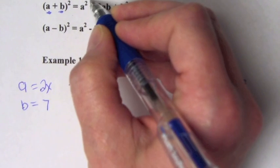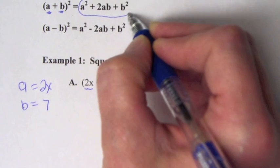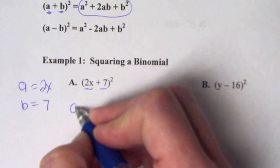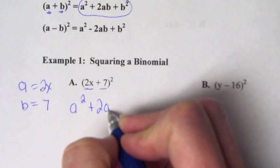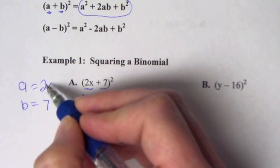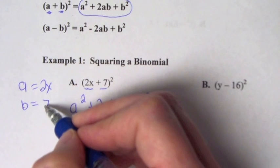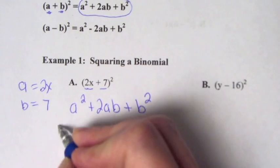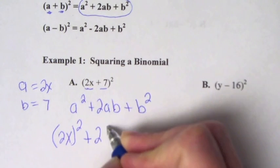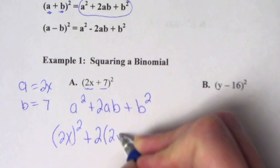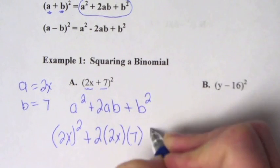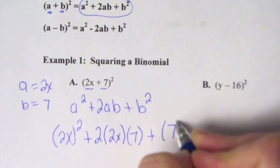So we're going to use the formula a squared plus 2ab plus b squared. We plug in 2x for a and 7 for b. So we get (2x) squared plus 2 times 2x times 7, and then plus 7 squared.